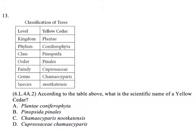Question 13. According to the table above, what is the scientific name of a yellow cedar? A. Plantaconiferophyta. B. Penopsida pinellis. C. Chameis cyperis. D. Cupra casei chameis cyperis.